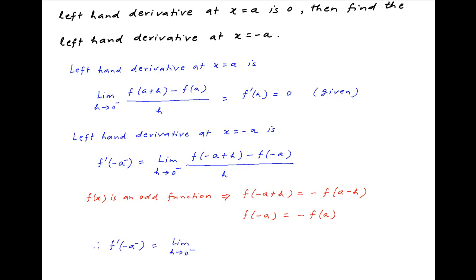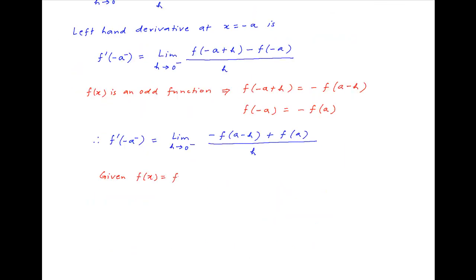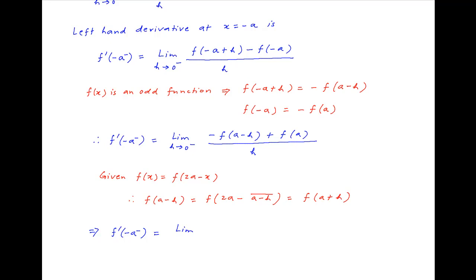Therefore the left-hand derivative at x equal to minus a is equal to the limit h tending to 0 from the negative side of minus f of a minus h, plus f of a, divided by h. We are also given that f of x is equal to f of 2a minus x. Replacing x with a minus h, this means f of a minus h equals f of 2a minus a minus h, which equals f of a plus h. Using this result, the left-hand derivative at x equal to minus a becomes the limit h tending to 0 from the negative side of minus f of a plus h, plus f of a, divided by h.